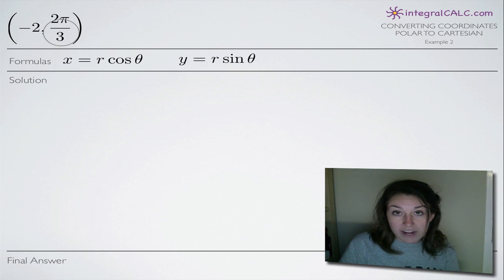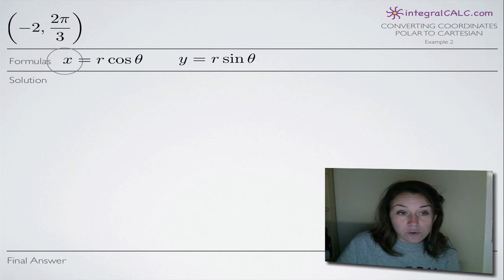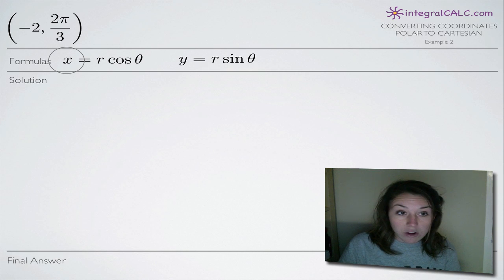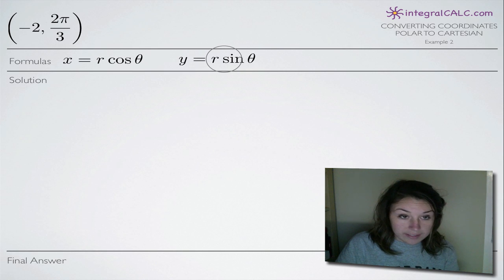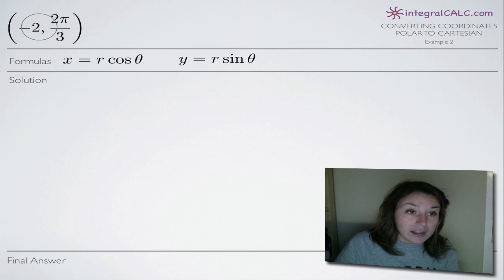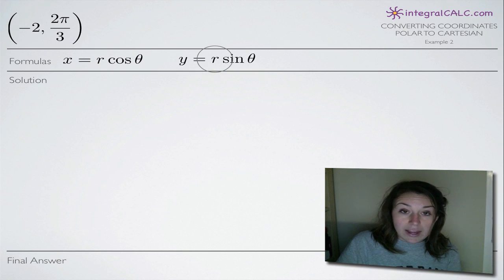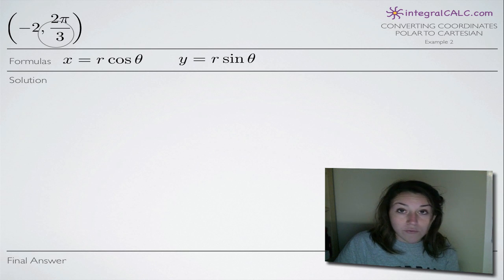The point is r, theta, just like a Cartesian point would be x, y. So these are the two formulas we're going to be working with to convert the polar point to a Cartesian point: x equals r cosine theta and y equals r sine theta. We plug in negative 2 for r into both formulas, and we plug in 2pi over 3 for theta.